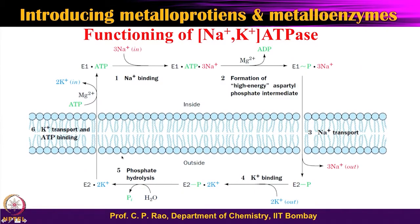The same thing is explained in a slightly different way here. E1 is one conformational state of the protein. When ATP binds, it is active, and sodium ions are taken in. So you have E1-ATP-sodium. At this stage, magnesium ions activate the ATP and convert it to ADP, attaching the phosphate group to the protein. When the phosphate group is added, the protein conformation changes from E1 to E2, and at that stage sodium has no affinity and is released outside.